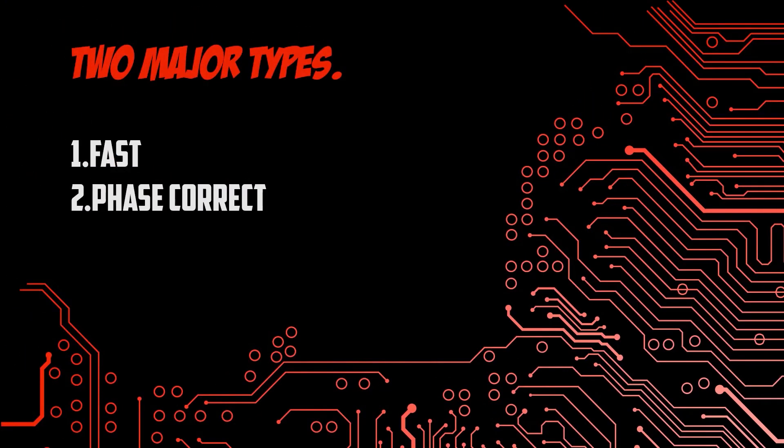A PWM wave can be generated in two major types: fast and phase correct. In the fast mode, we use only the increasing gradient of the wave, whereas in the phase correct mode, we use both the increasing and decreasing gradient of the wave.